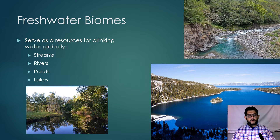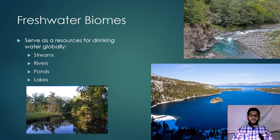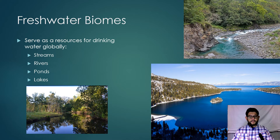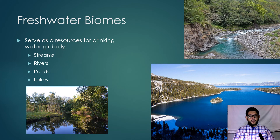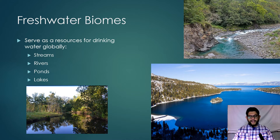The first biomes we'll cover are freshwater biomes. Freshwater biomes are generally a big source of drinking water for humans — a good portion of people in the United States use them as a drinking water source. These include streams, rivers, ponds, and lakes. They can be characterized as either moving or non-moving: streams and rivers are moving bodies of water, while ponds and lakes are not moving — those are called lentic or lotic bodies of water.